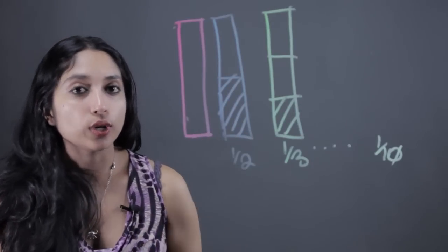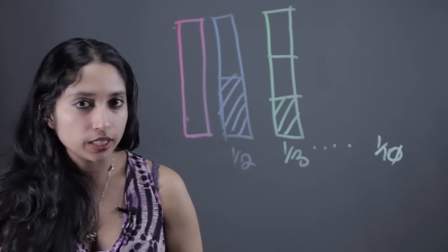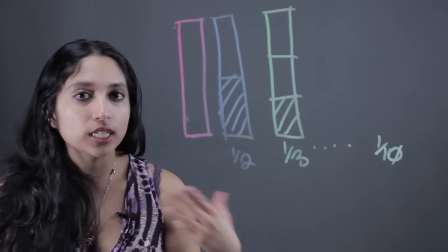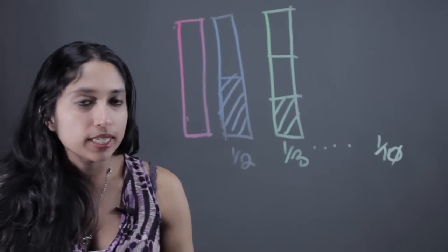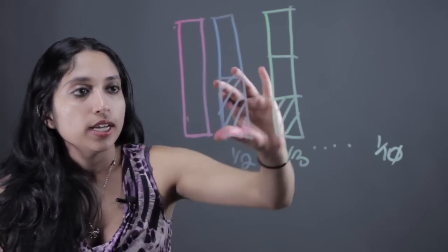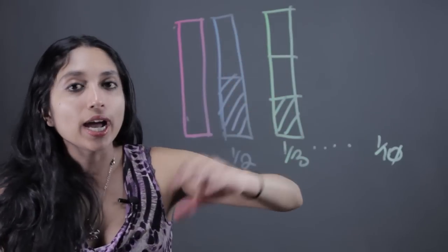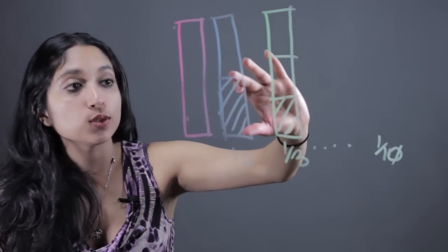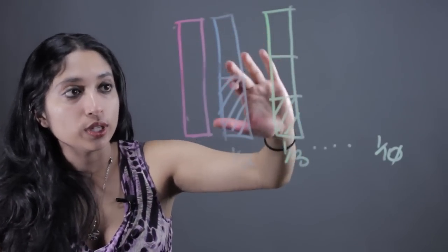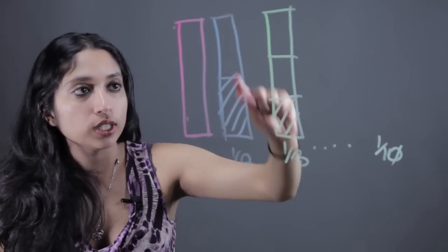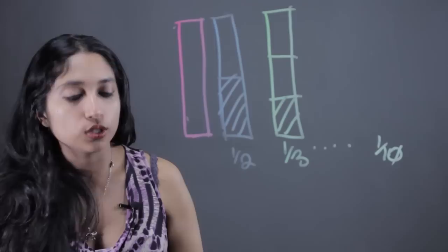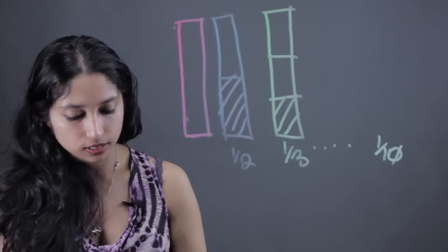This is great because fractions can kind of be confusing — it's kind of this abstract thing, like what do you mean a half? And here you can kind of help them visualize. A half is one out of two. We have two pieces, and one half is literally one out of the two pieces.